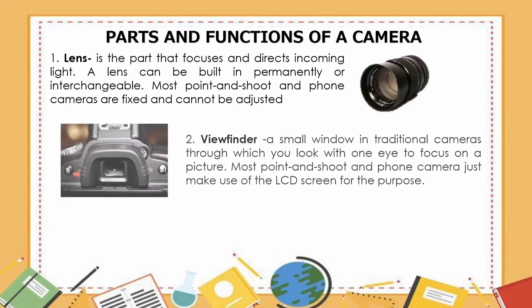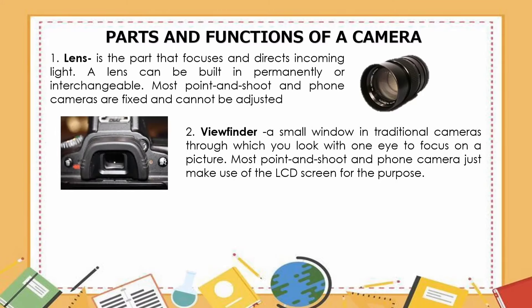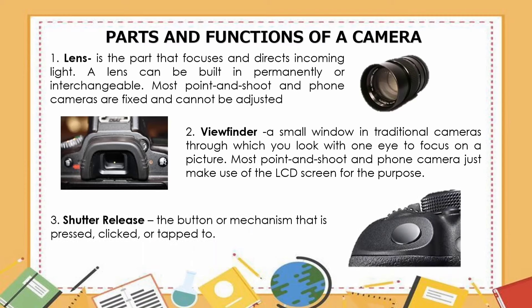The second part is the viewfinder — a small window in traditional cameras through which you look with one eye to focus. Most point and shoot and phone cameras just make use of the LCD screen for this purpose. The third part is the shutter release — the button or mechanism that is pressed, clicked, or tapped to take a photo.